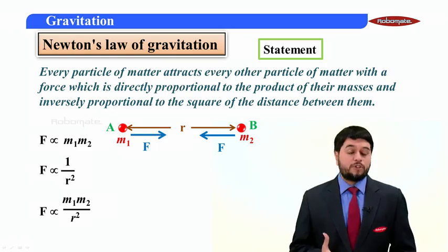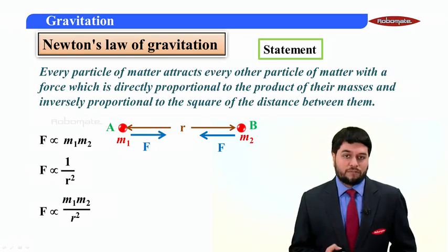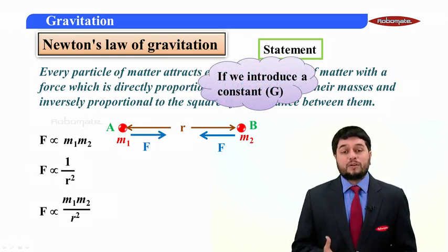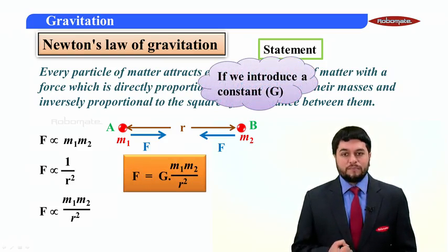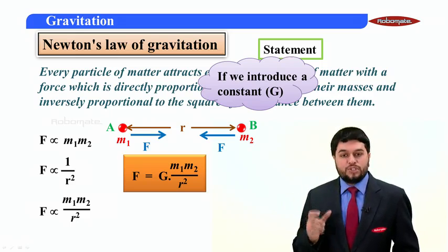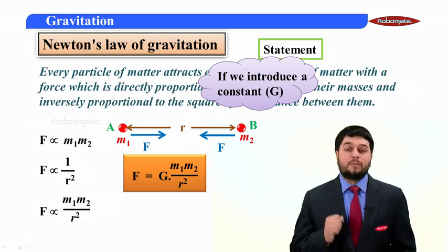If I remove the proportionality and make an equation out of it, I will have to put a proportionality constant. So if we introduce a constant, say capital G, then the equation becomes F equals G m1 m2 upon r square.